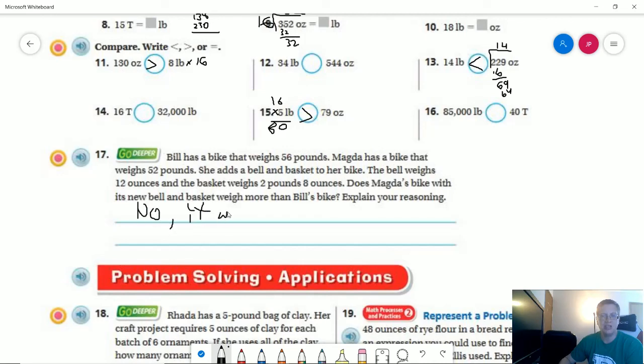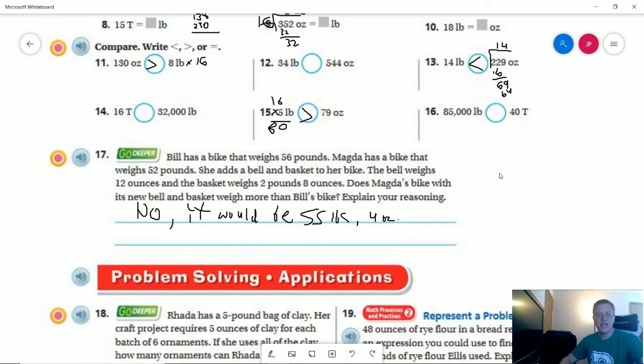And I believe, unless I made a mistake somewhere, it would be 55 pounds, four ounces, which would be eight ounces less than the weight of this bike. So that's what we were working on for the lesson for today.